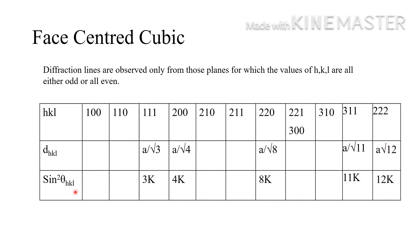The sin² theta values for FCC are: 3K, 4K, 8K, 11K, 12K. So if a crystal powder diffraction pattern shows sin² theta values in the ratio 3:4:8:11:12, that means the structure is face centered cubic.